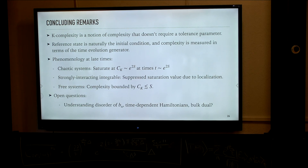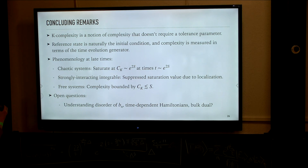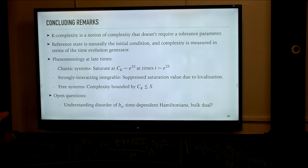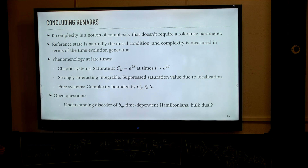K-complexity is a notion of complexity that does not require an external tolerance parameter. We've been interested in studying it because it is naturally suited to the time evolution of some initial condition with some Liouvillian and no other ingredients. It has a certain phenomenology at late times: for chaotic systems, it saturates at an exponentially large value at exponentially large timescales; for strongly interacting integrable systems, it has a suppressed saturation value due to localization effects in the Krylov chain; and for free systems, it is saturated by a very small value which is going to be linear in system size.